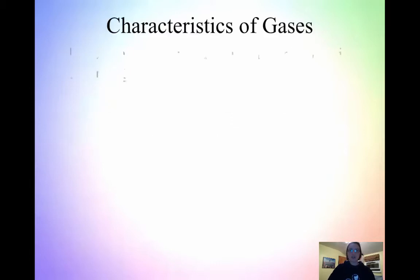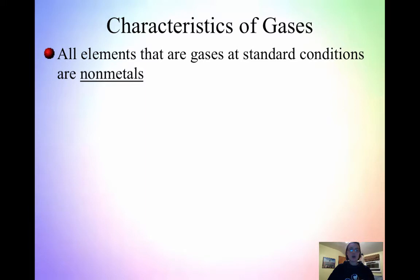So, characteristics of gases. All elements that are gases at standard conditions are non-metals. Almost all non-metals are gases at standard conditions, with a few exceptions. Bromine and iodine are two of the big ones that exist as liquid and solid, respectively, at standard conditions. Everything else, every other non-metal, is a gas.